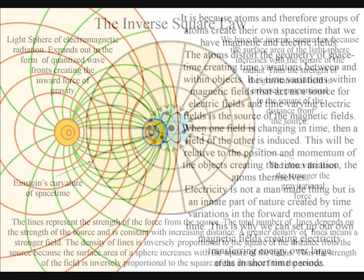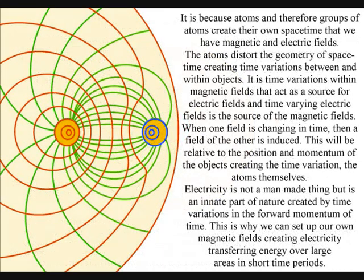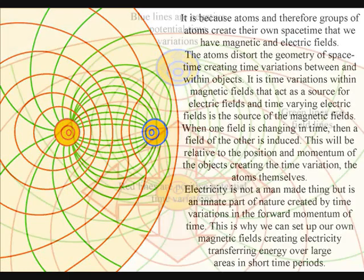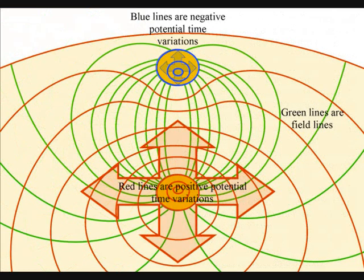When the atoms come together under their own gravity, their space-time will synchronize, distorting the geometry of space-time, creating time variations between and within objects. It is time variations within magnetic fields that act as a source for electric fields, and time varying electric fields is the source of the magnetic fields.